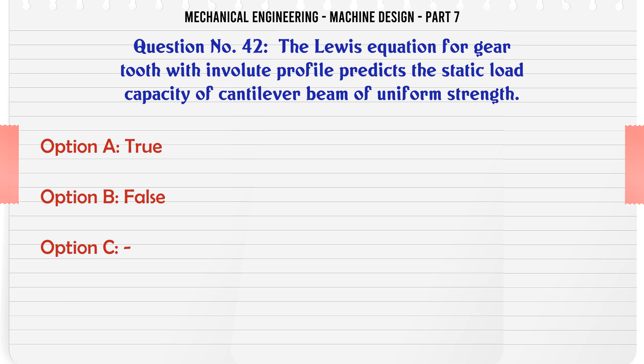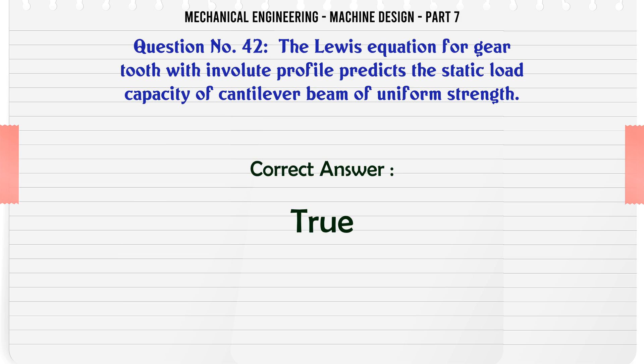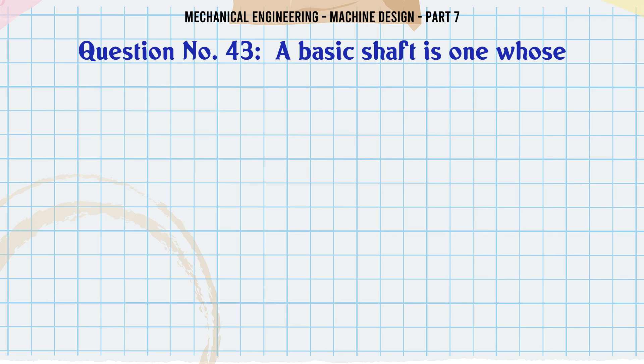The Lewis equation for a gear tooth with involute profile predicts the static load capacity of a cantilever beam of uniform strength. a) True, b) False. The correct answer is: True.